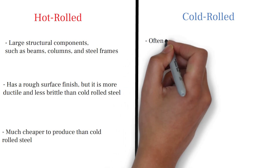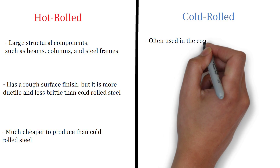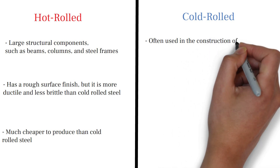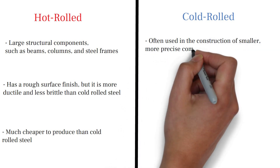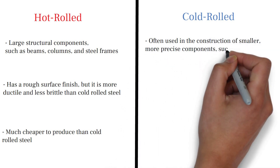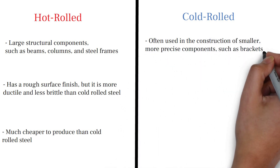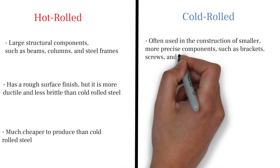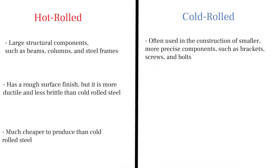Cold rolled steel, on the other hand, is often used in construction of smaller, more precise components such as brackets, screws and bolts. It is often used for the production of steel sheets and strips with a smooth surface finish and precise dimensions, which are often used in cladding and roofing applications.